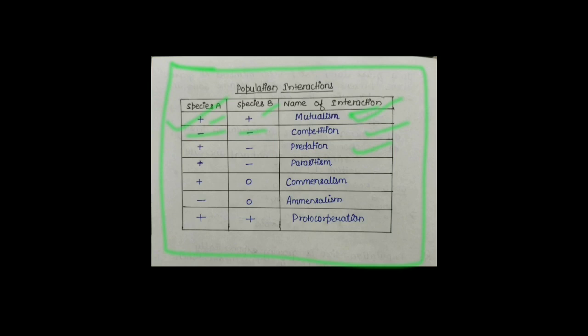Another one is Predation। Predation में एक Species के लिए Positive और दूसरे Species के लिए Negative use किया है — एक Species को फायदा होगा, तो दूसरे Species को Harm हो रहा है। Predation और Parasitism में ये Difference है कि Predation अपने Prey Species को Kill कर देता है — वो Completely मर जाते हैं। But Parasitism के केस में ऐसा नहीं होता — Negative वाले Species को बहुत ज्यादा Harm होता है, पर Kill नहीं होता।